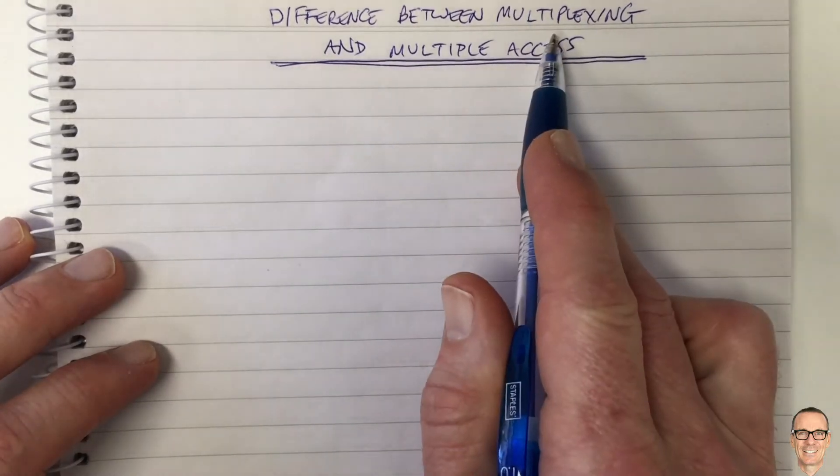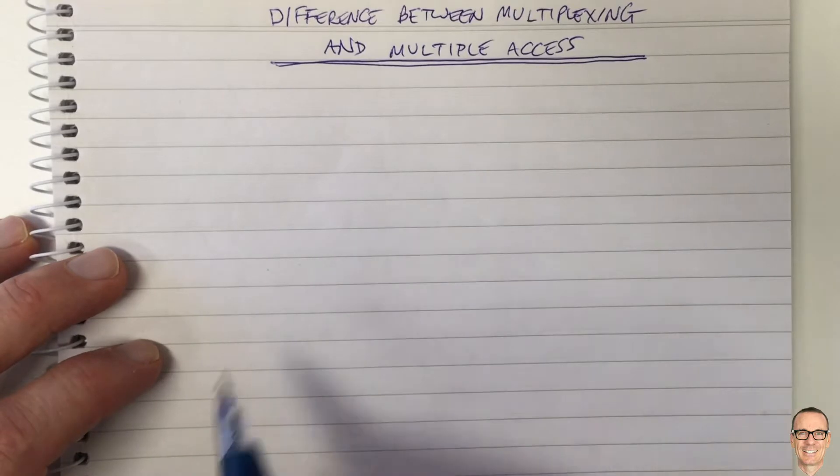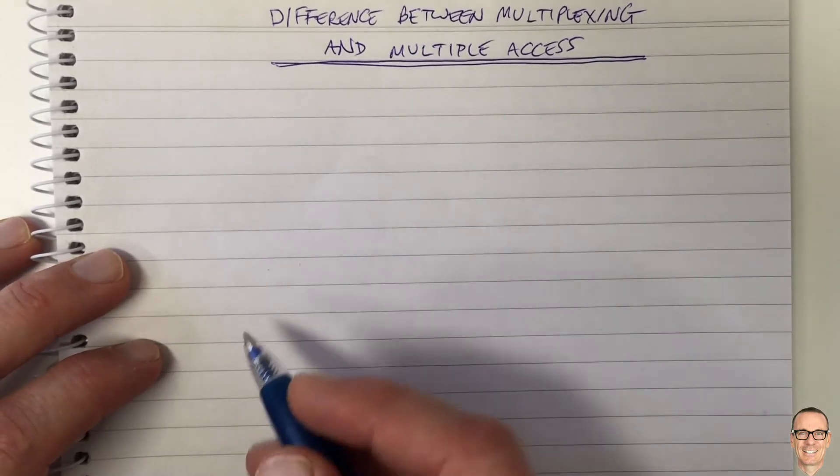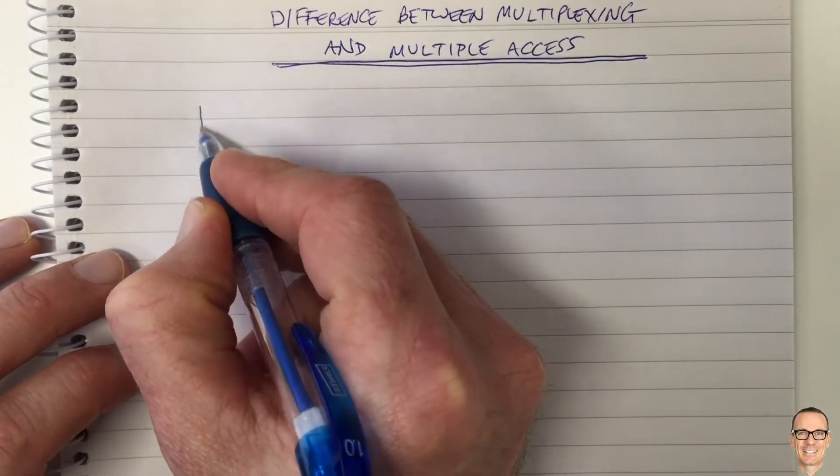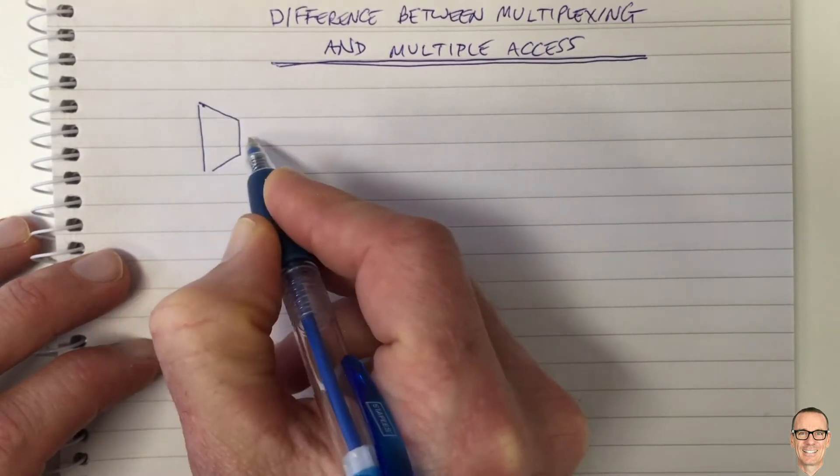So what's the difference between multiplexing and multiple access in communication systems? It really comes down to multiplexing being a term that's used when you've got a point-to-point link.